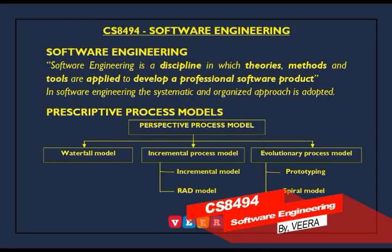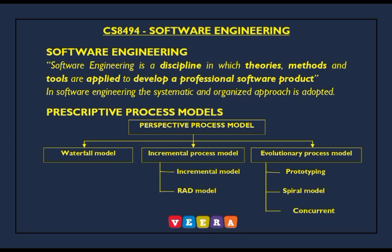Today we are going to discuss CS 8494 Software Engineering. Software engineering is a discipline in which theories, methods, and tools are applied to develop a professional software product. It is also defined as a systematic and organized approach adapted for software development.